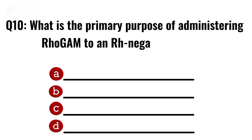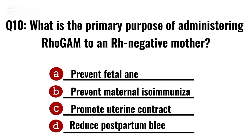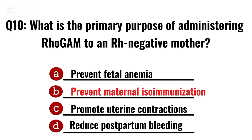Question 10. What is the primary purpose of administering Rhogam to an Rh-negative mother? Correct option B: Prevent maternal iso-immunisation.